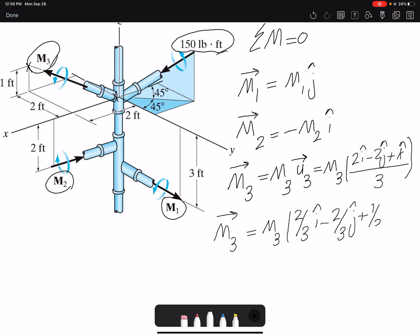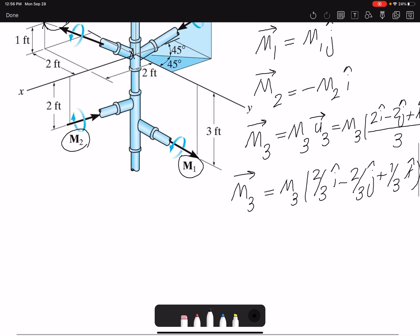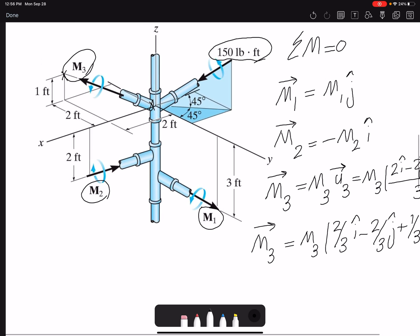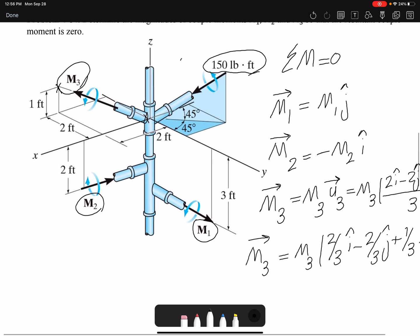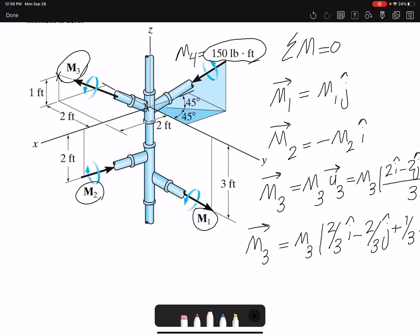So far I found M1, M2, and M3. And then for this moment that I'm going to call M4, I have the magnitude and I have the angles. So again, the angles are in 3D.